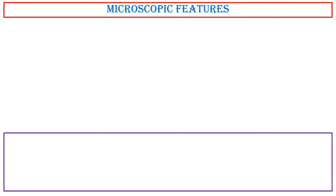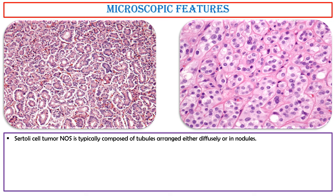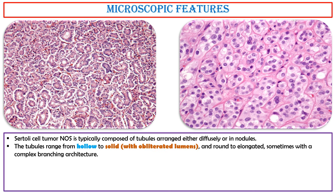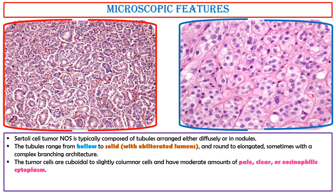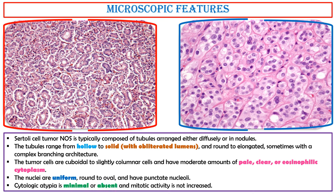Microscopic Features: Sertoli cell tumor, not otherwise specified, is typically composed of tubules arranged either diffusely or in nodules. The tubules range from hollow to solid with obliterated lumens, round to elongated, sometimes with a complex branching architecture. The tumor cells are cuboidal to slightly columnar with moderate amounts of pale, eosinophilic cytoplasm. The nuclei are uniform, round to oval, with punctate nucleoli. Cytologic atypia is minimal or absent, and mitotic activity is not increased.